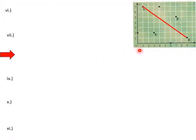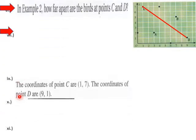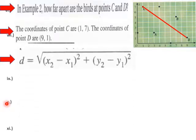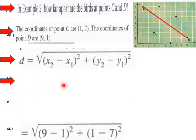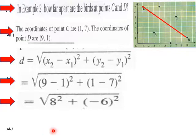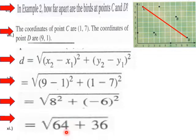To find this distance, we use our distance formula. The coordinates are 1 comma 7 and 9 comma 1. We plug that in. Here's our distance formula. We have 9 minus 1 and 1 minus 7. We square that difference and get 8 squared plus negative 6 squared, which is 64 plus 36.